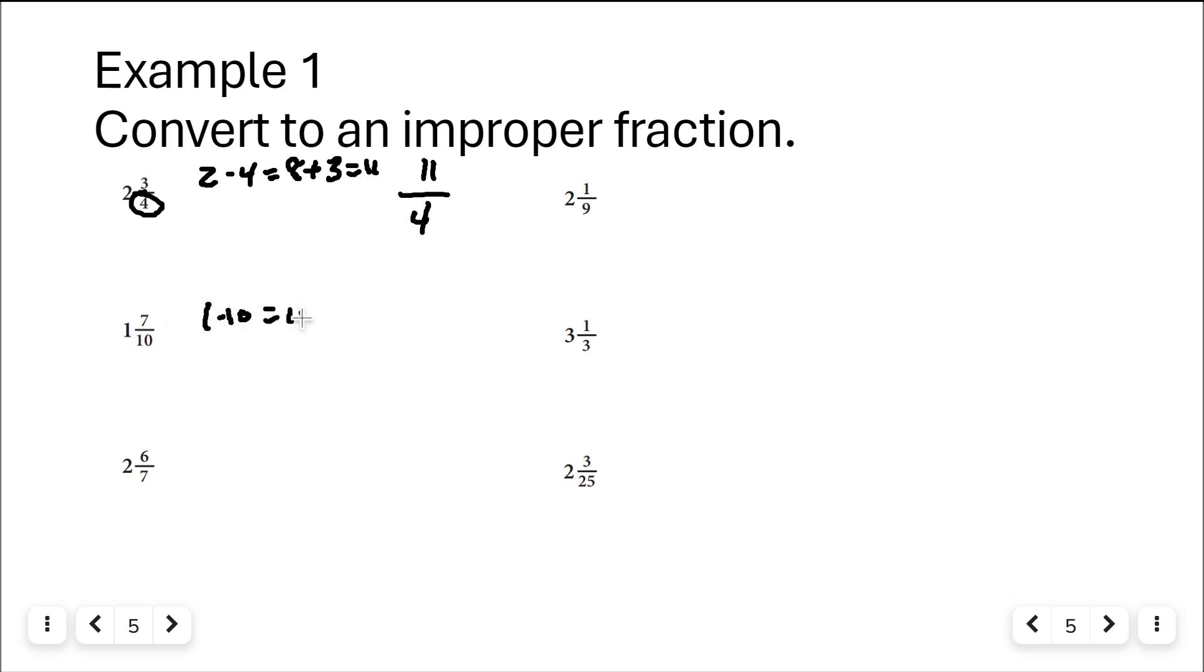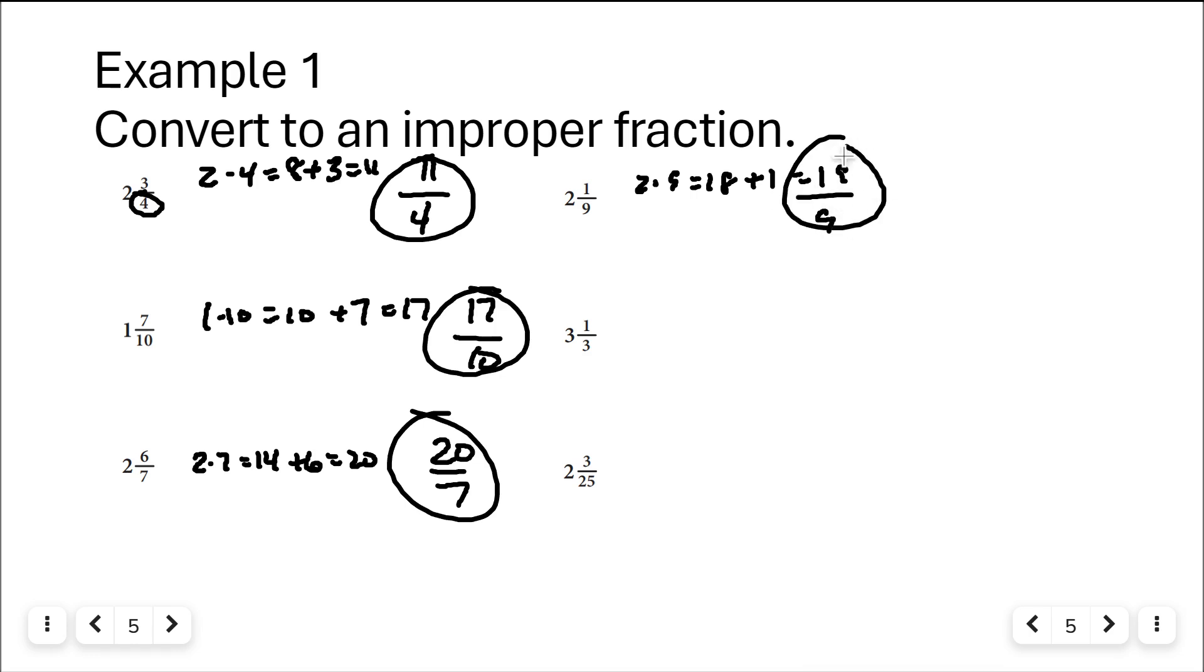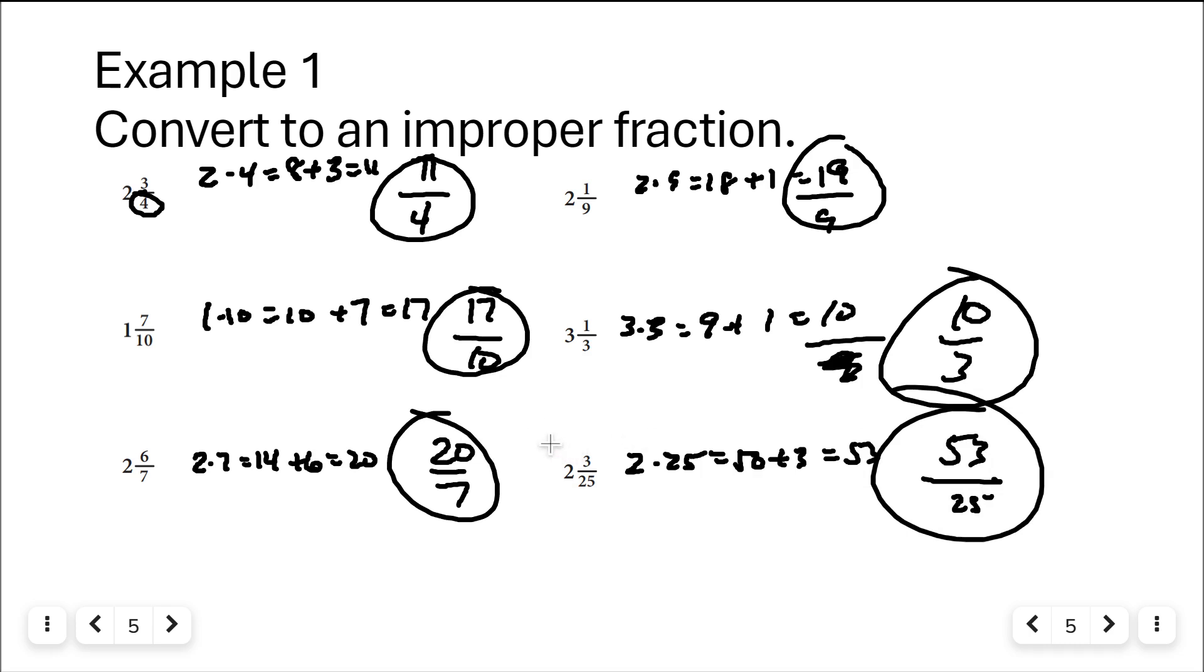1 times 10 is 10 plus the numerator is 17. That's 17 over 10. 2 and 6 sevenths: 2 times 7 is 14 plus 6 more is 20, 20 over 7. 2 times 9, that's 18, and one more make 19 over 9. 3 times 3 is 9 plus 1 is 10 over 3. 2 times 25 is 50 plus 3, the numerator is 53. That's 53 out of 25. So these have all been converted to improper fractions.